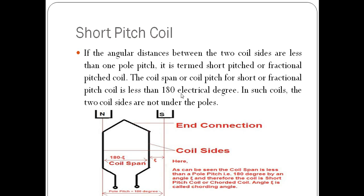In a short pitch coil, the coil span or coil pitch will not be equal to 180 degrees; rather, it will be somewhat lesser than 180 degrees. In this figure, you can see the coil sides are not under the poles of the machine — this coil side is under the north pole, but this coil side is not under the south pole. So the coil span or coil pitch will not be equal to one pole pitch; it is lesser than one pole pitch. The angle by which the coil span is less than 180 degrees is known as chording angle.